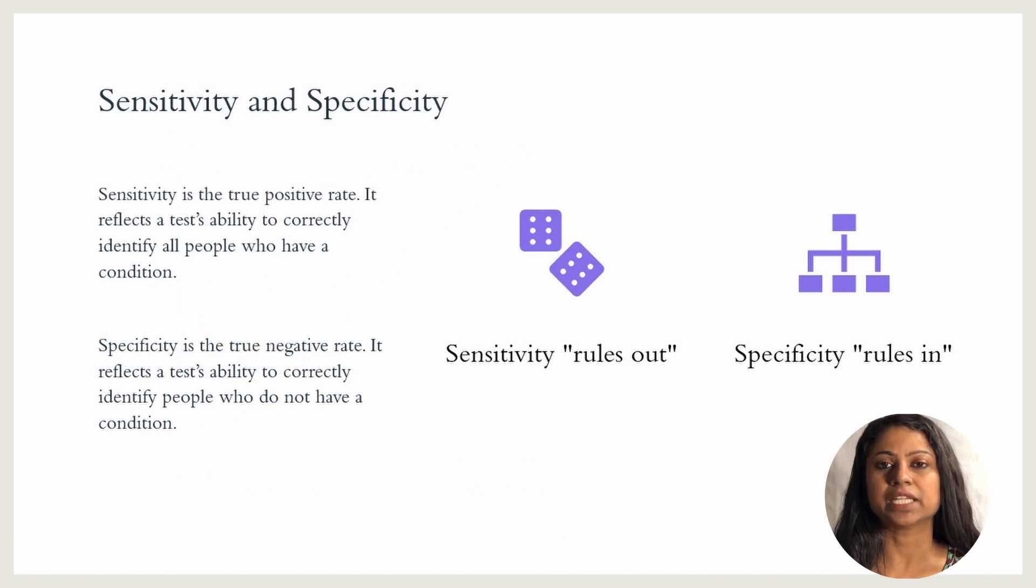To correctly interpret an ROC curve, we need to know what is meant by sensitivity and specificity. Sensitivity is the true positive rate. It reflects a test's ability to correctly identify all people who have a condition. Specificity, on the other hand, is the true negative rate. Specificity reflects a test's ability to correctly identify people who do not have that condition.